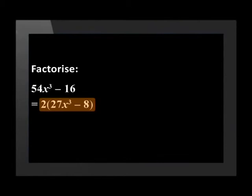We divide each term by 2 and get 2(27x³ - 8). We now recognize that inside that bracket we have the difference of two cubes, so this needs to be factorized even further.